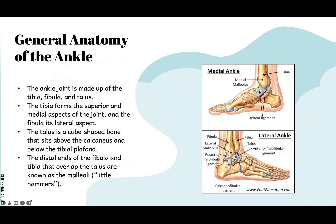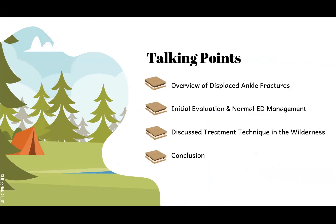The general anatomy of the ankle: it consists of the tibia, fibula, and the talus. The tibia forms the superior medial aspects. The fibula is the lateral aspect. There's a cube-shaped bone that sits just above the calcaneus, called the talus. The distal ends of the fibula and tibia kind of overlap with the talus — that's known as the malleoli. Today's talking points include an overview of displaced ankle fractures, initial evaluation, normal ED management, and the proposed treatment technique described by the author.